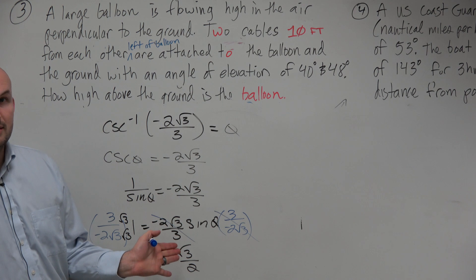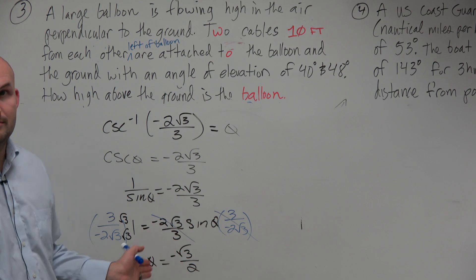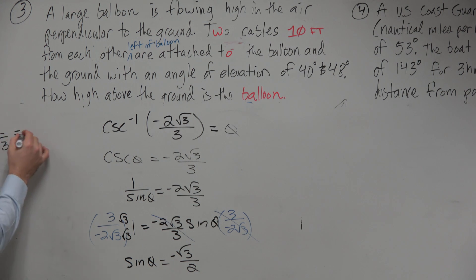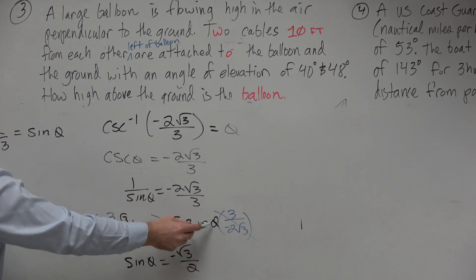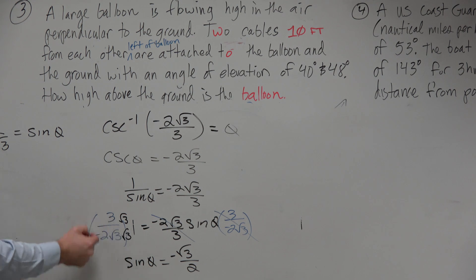Does everybody see my mathematics that I did now? You guys want me to show some mathematics on the side? All right, so I had 3 over negative 2 radical 3 equals sine of theta. Everybody agree with me? That's what I had here. That goes to 1, so you have sine of theta.